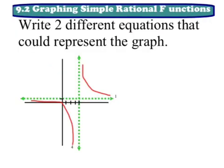And the last thing we're going to do is look at this graph and write an equation that could model it. So the first thing I'm going to do is identify my vertical and horizontal asymptotes. And we can see that we have a vertical asymptote at x equals 4 and a horizontal asymptote at y equals 1.